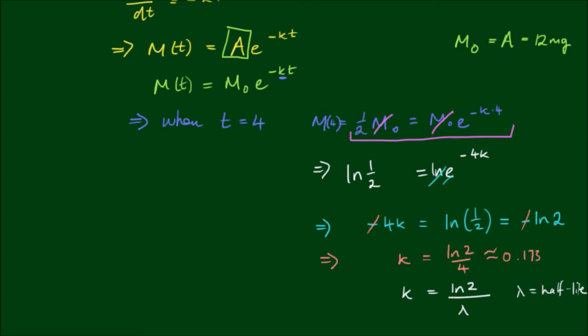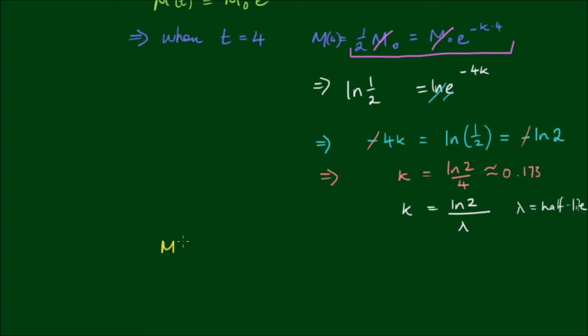So putting that back into our solution, we've got M equals M₀e^(-0.173t). Well, t is in hours. Now we said M₀ was equal to 12 milligrams. So really our function is M equals 12e^(-0.173t).